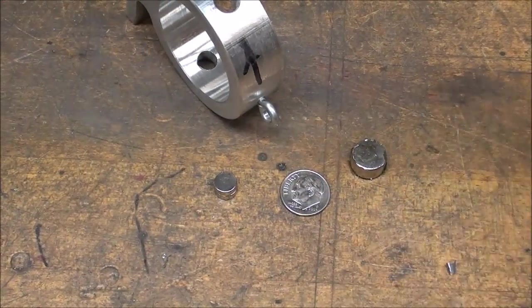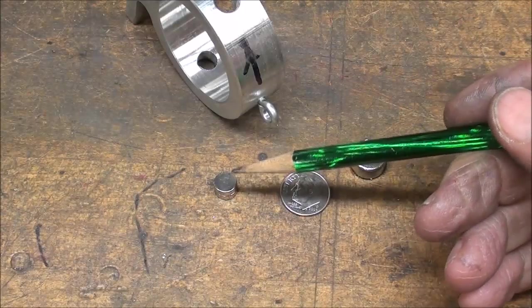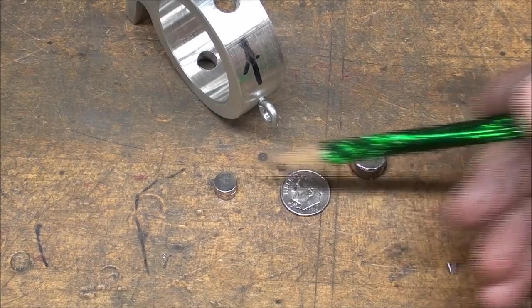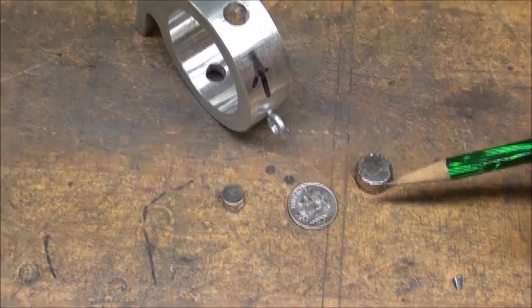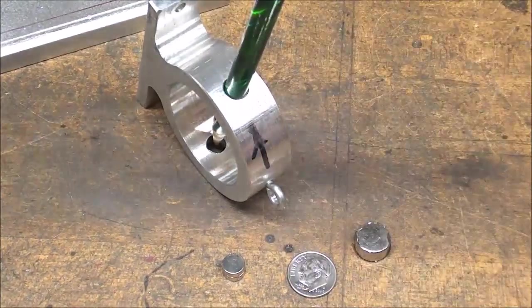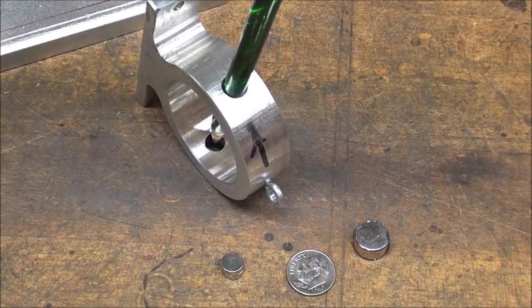The machine is stripped down again. And these are the magnets that were in there, five sixteenths in diameter. This will be the new magnet, and that's half inch in diameter. So over to the milling machine I go to bore those holes out.